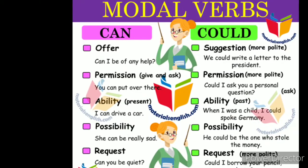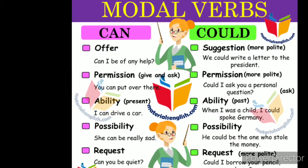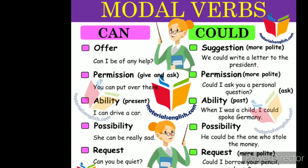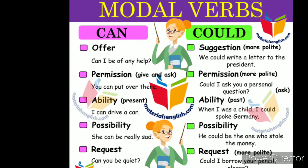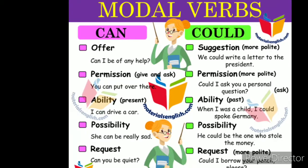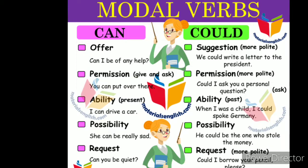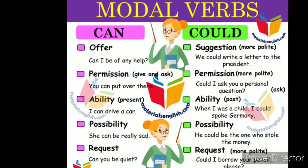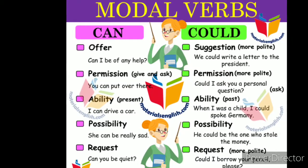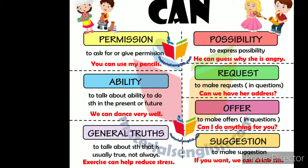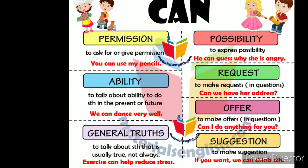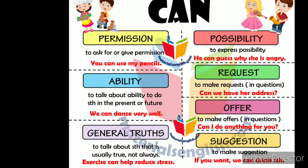How can you use the main function? Ability is the main function of Can. That means we use Can. If you request, possibility, permission, or offer — we use Can. Now there is a confusion: if we have permission, possibility, or request, then we can use both Can and May.